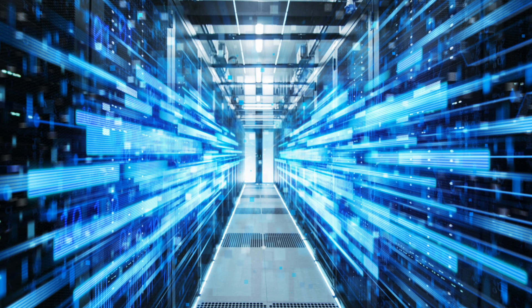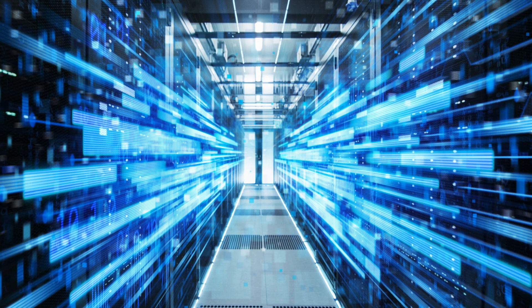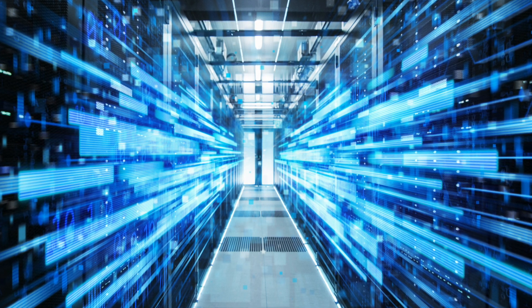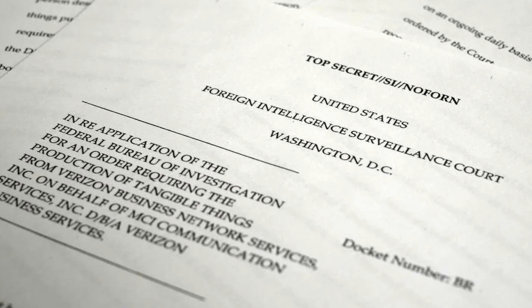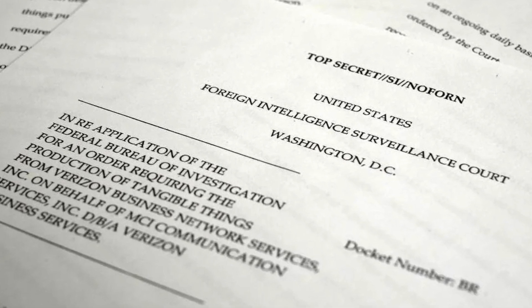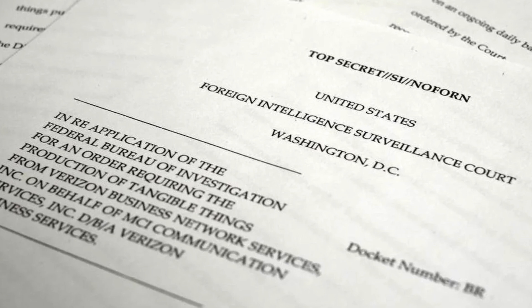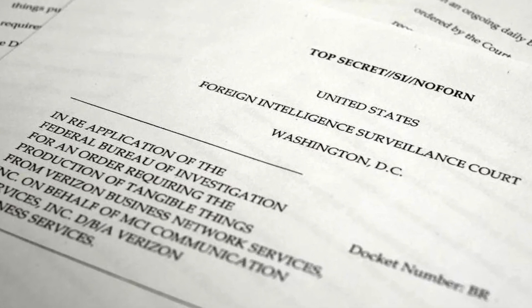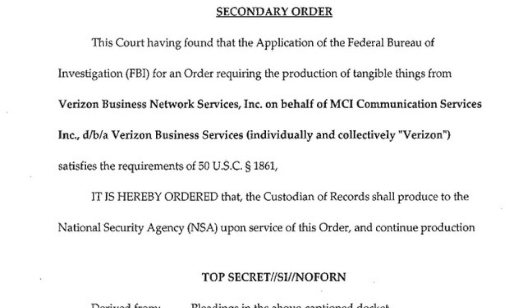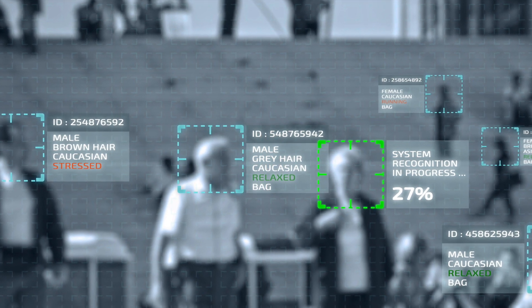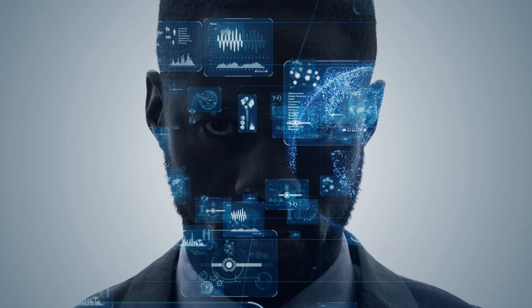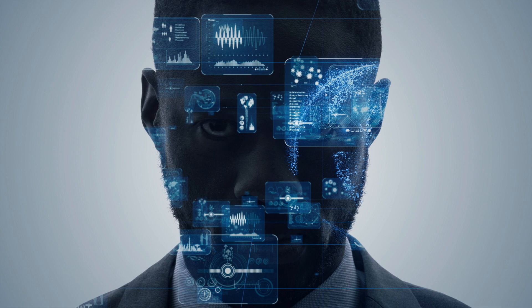In a letter to Attorney General Eric Holder in 2012, the U.S. Senators stated: As we see it, there is now a significant gap between what most Americans think the law allows and what the government secretly claims the law allows. This is a problem because it is impossible to have an informed public debate about what the law should say when the public doesn't know what its government thinks the law says. The 2013 Verizon Datagrab is similar to a program authorized by the Bush administration in 2001 and reported by USA Today in 2006, which implemented the collection of phone call records to analyze call patterns to detect any forbidden activity. The 2013 court order is the first hint that the Obama administration has followed a similar path.